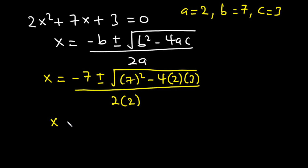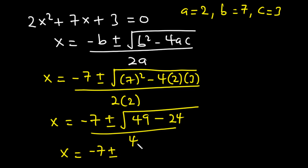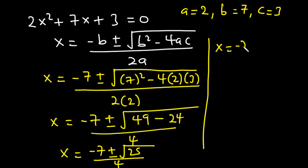Substituting: x = (−7 ± √(7² − 4 × 2 × 3)) / (2 × 2). This gives x = (−7 ± √(49 − 24)) / 4. Since 4 × 2 = 8 and 8 × 3 = 24, we have 49 − 24 = 25, so x = (−7 ± √25) / 4 = (−7 ± 5) / 4.